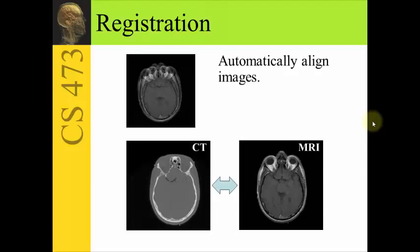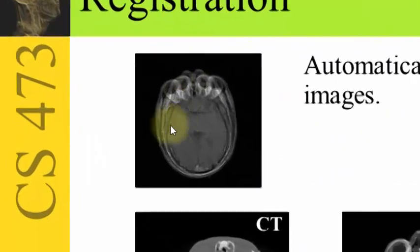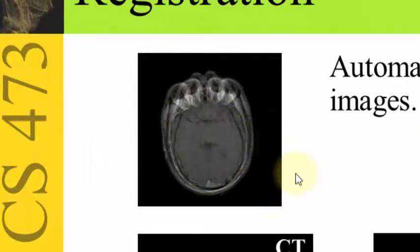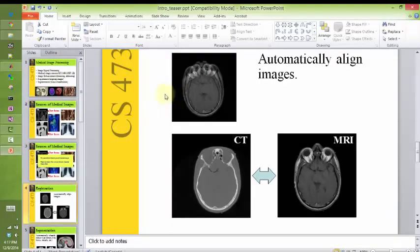We'll spend more time on registration. Registration is taking images that are not aligned and aligning them. So pictures of the same thing, but if you overlay them, you can see here these two MR scans are not perfectly aligned. So when you put them together, they don't quite match up. So let me just show you something typical from a lecture.